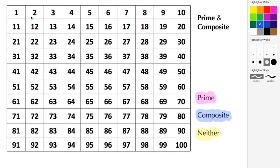Here we start with the number 1. The number 1 can only be divided by 1, so it has only one factor, and that doesn't make it prime nor composite. So we have to shade that in yellow because that's in the neither category.